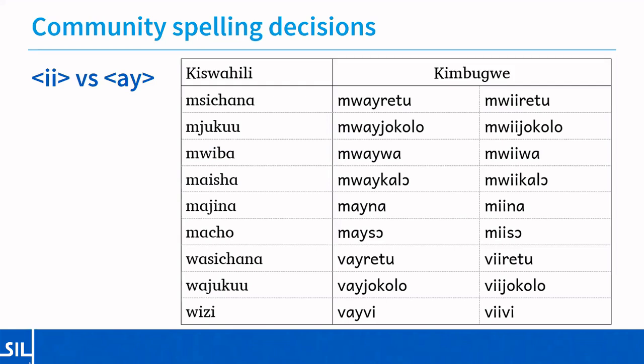One concern with these decisions, particularly the last one, is that all of the language committee members present were over 40. We do need to do some testing to find out whether younger people would find these decisions acceptable. All of the decisions need to be tested over a period of time to see if they actually work well in practice — only as people start trying to use the orthography will we be able to tell whether it's really fit for purpose. While we'll go ahead with these spellings for the moment, we'll hold on to the decisions lightly and are definitely open to changing them if that seems the right thing to do at a later point.